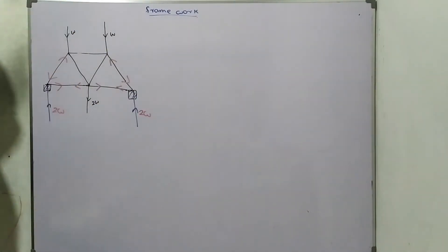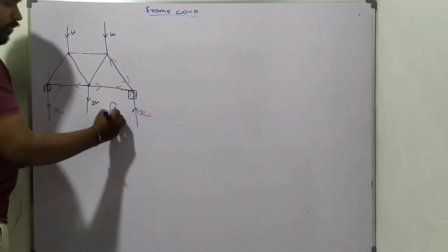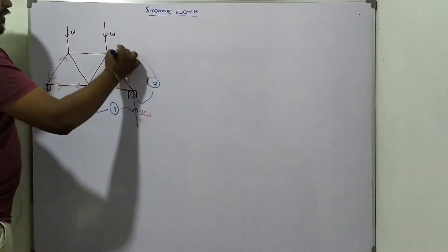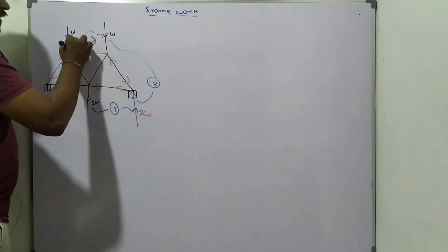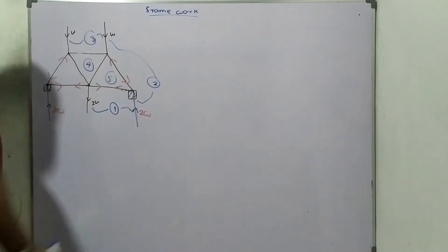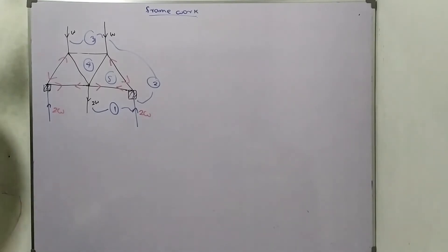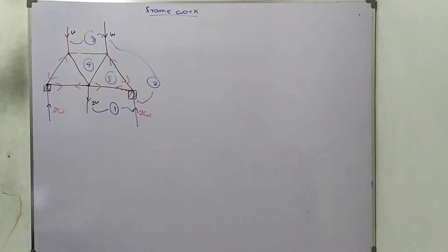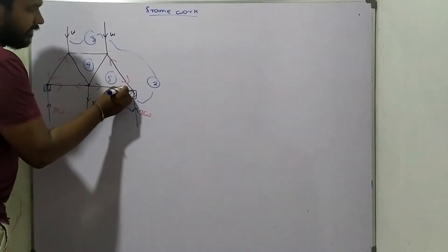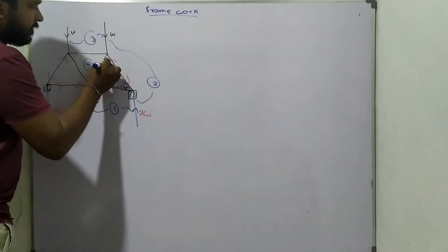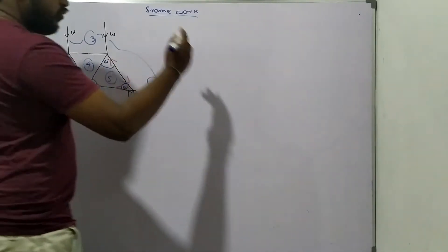This is a symmetrical system, so we can take one side — the other side will automatically follow. I put number one here, number two here, number three here, four, five. Now I'm going to draw the stress diagram. The stress diagram is like a scalar diagram where the forces are indicated by distances, and the angles are the same — 60 degrees.